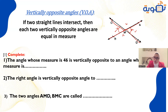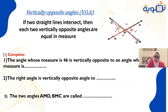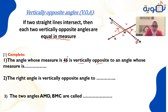Also, the measurement of angle AMD equals the measurement of angle CMB. Let's solve: the angle whose measurement is 46 degrees is vertically opposite to an angle whose measure is also 46 degrees — they are equally measured.